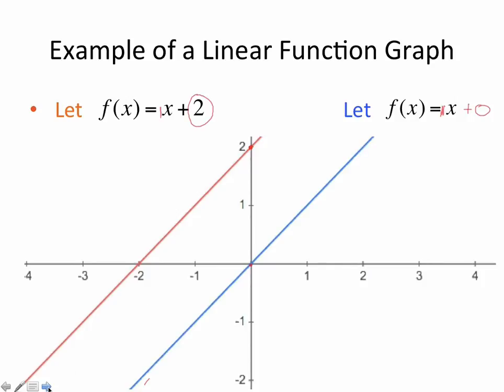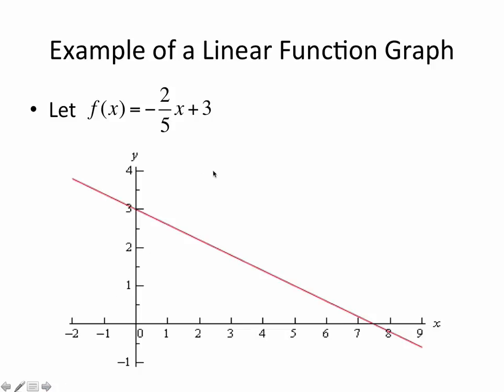Moving on to a little more challenging graph. We have now the graph of f(x) = -2/5x + 3. Notice the gradient in this case is negative.